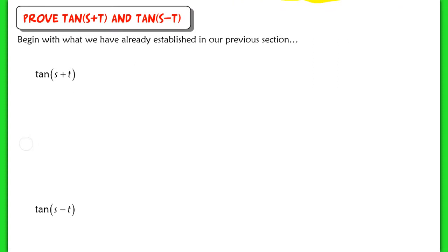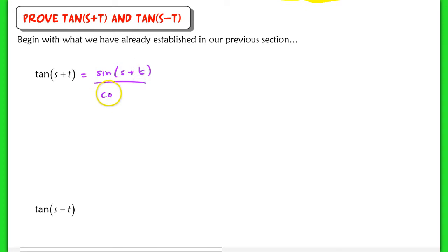Let's start with the tangent of s plus t. Let's break that up into the sine of s plus t over the cosine of s plus t. I want you to pause now and try this on your own. You're going to probably get stuck at some point, but that's okay — you're just practicing it. Hit play when you get stuck.